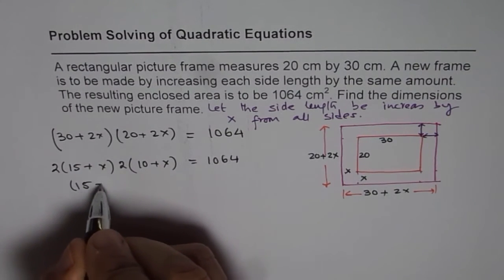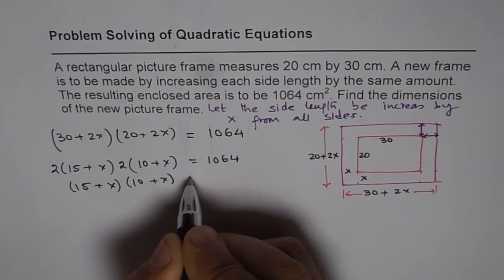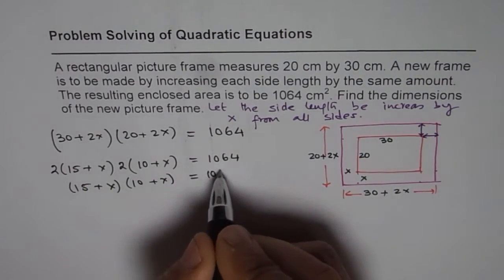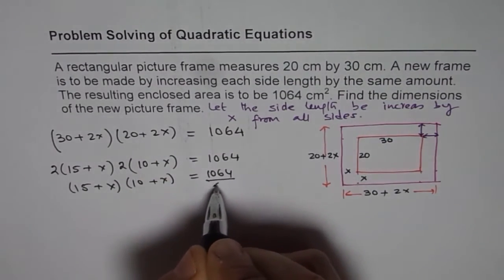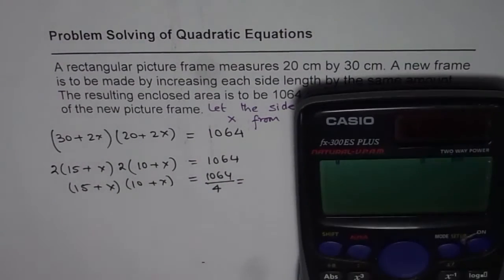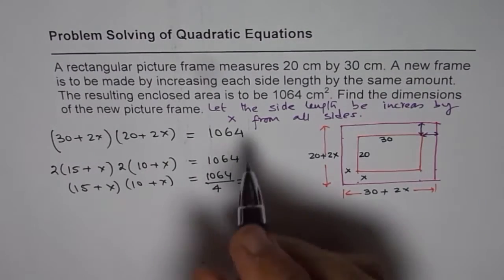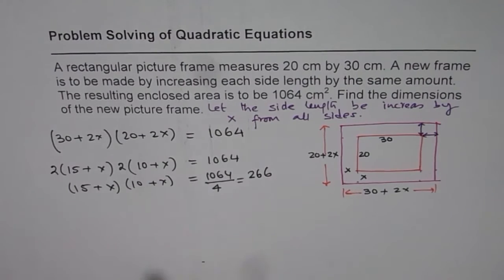Now we can divide by 4. So I am just doing all this to show you that at times we can work with smaller numbers. So when you divide 1064 by 4, you get 266. So we get 266.